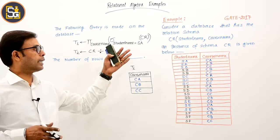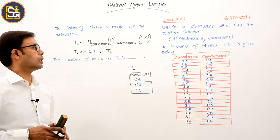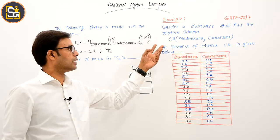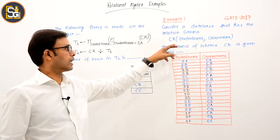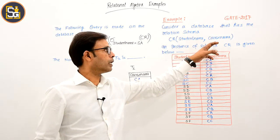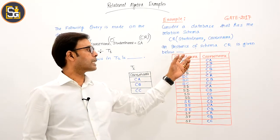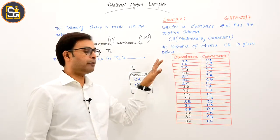Consider this GATE 2017 question. Consider a database that has the relation schema CR with student name and course name. An instance of schema CR is given below.